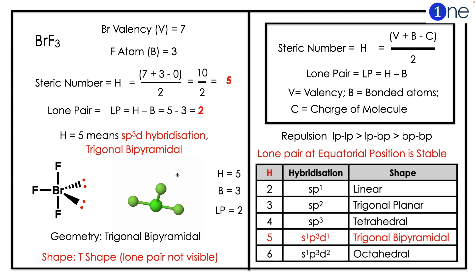The steric number is H equals (V + B - C) divided by 2. The lone pair is LP equals H minus B. If you substitute, bromine valency is 7, fluorine atoms are 3, which means steric number is 5. The lone pair will be H minus B, which equals 2.